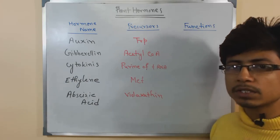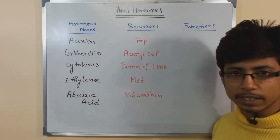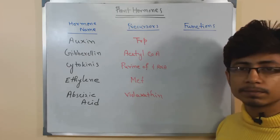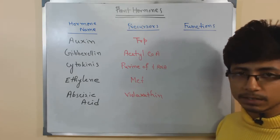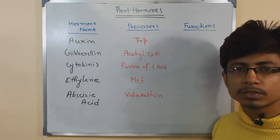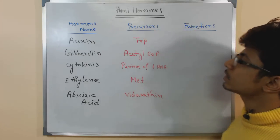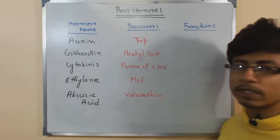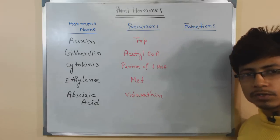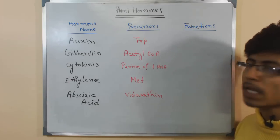The things you need to know about plant hormones are: the names of the major plant hormones, their precursors — that is, from which materials they are being produced. Majorly, plant hormones are produced from amino acid derivatives or nucleic acid derivatives. We'll also be talking about the functions of all those plant hormones.